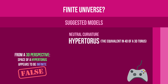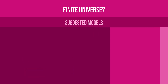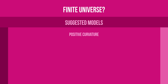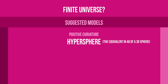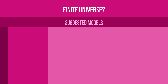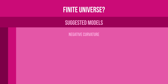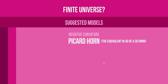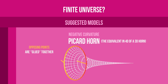However, current calculations could be wrong, and spacetime could be curved. If this curvature is positive, then one possible shape for the universe would be a hypersphere — the equivalent, in higher dimensions, of a sphere. A hypersphere is an object composed of points that are all located at the same distance from the center. On the other side, if the curvature is negative, one possible shape would be a Picard horn — the equivalent, in higher dimensions, of a 3D horn, whose opposing points have been glued together.